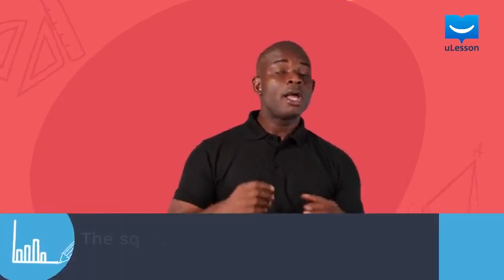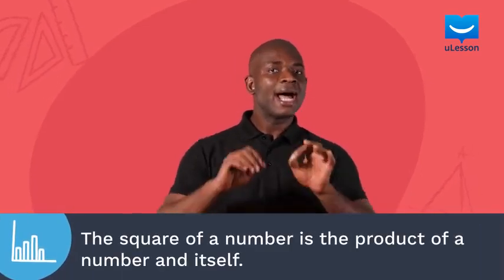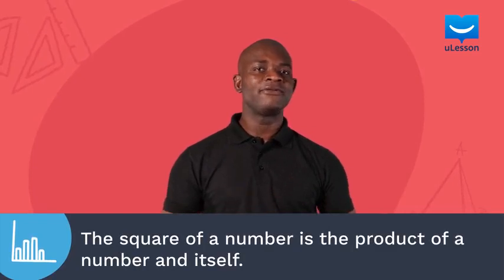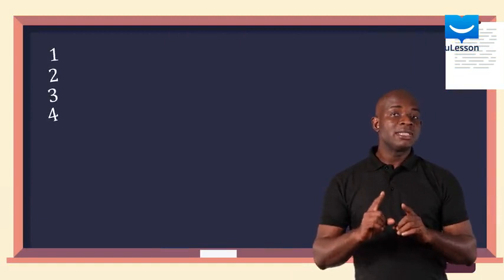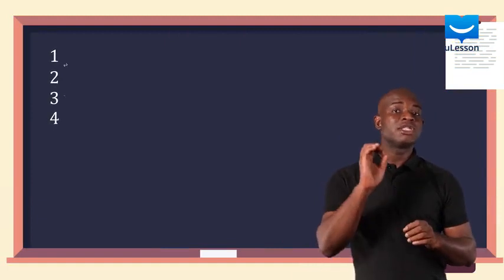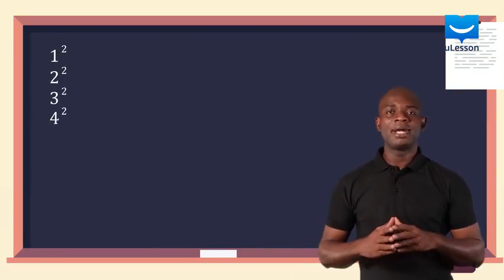The square of a number is the product of a number and itself. This means that to get the square of a number, you multiply the number by itself. The square of the number is represented with a small number 2 on the top of the number.